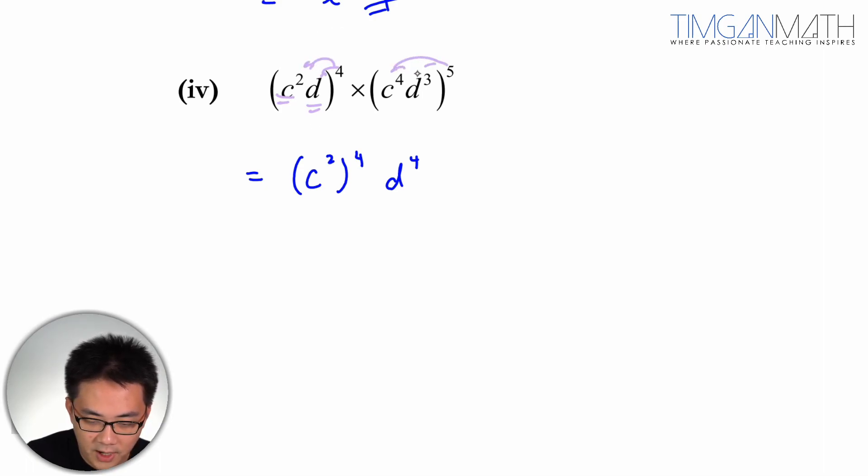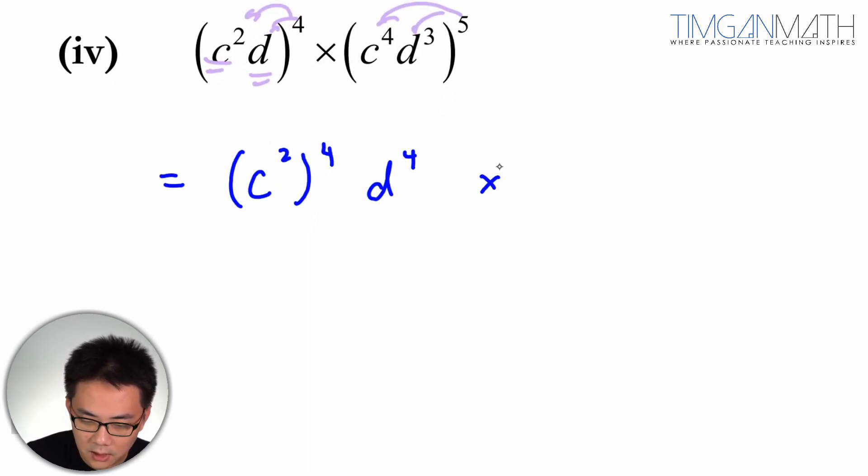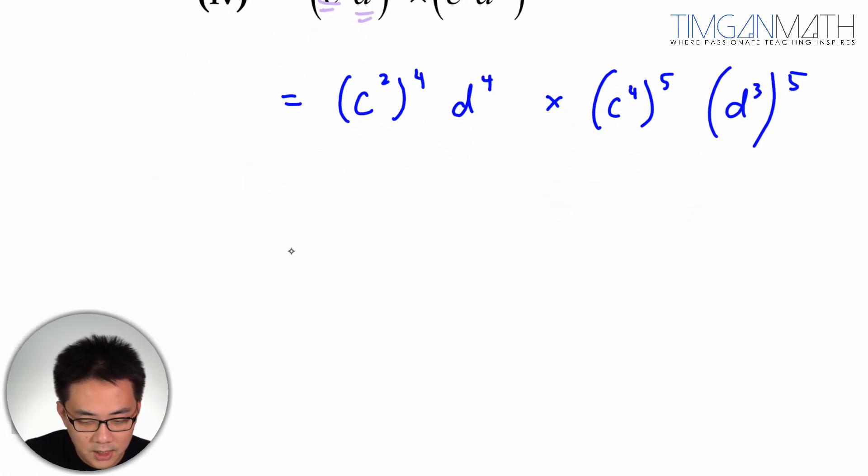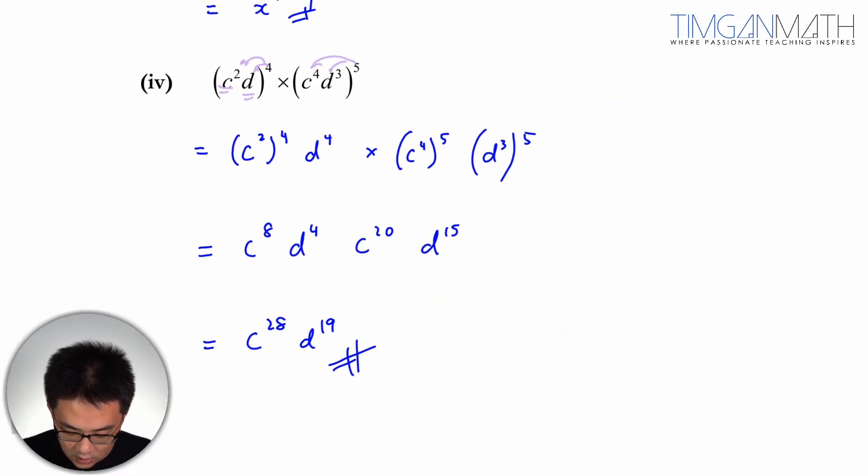Similarly with the second one, to the power 5. Bracket it. This case here, c to the power 4 to the power 5 times d, d to the power 3 to the power 5. So this case here, what I'm going to get is c to the power 8 d to the power 4 times c to the power 20 times d to the power 15. So this is 20 plus 8 to c to the power 28. And this is d to the power 19. So that's how we do this question here proficiently.